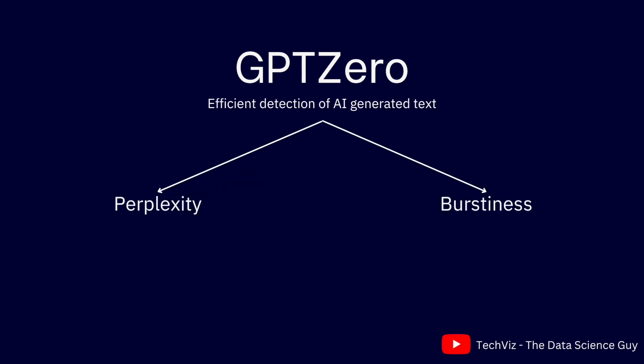GPT-0 essentially works on two principles: one is calculating the perplexity, and the second is burstiness.